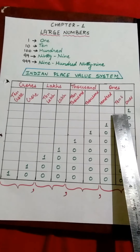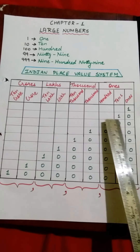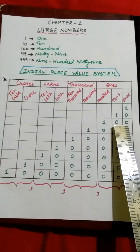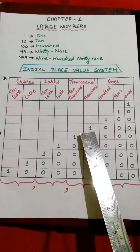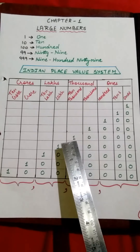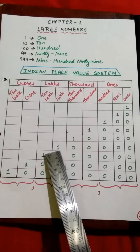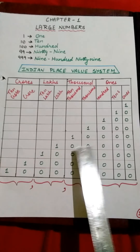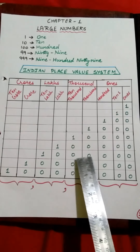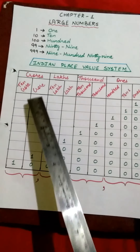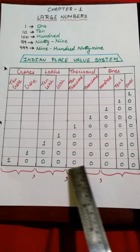If I am writing 1, it will come in the Ones place. That means we start filling from the Ones place. If you want to write 10, the 0 will come in the Ones place. If you want to write 1000, then 1 will come in the Thousands place followed by 3 zeros. If you want to write 10,000, then 1 will come in the Ten Thousands place followed by 4 zeros. If you want to write 1 Lakh, you will write 1 in the Lakhs position followed by 5 zeros. If you want to write 10 Lakh, the 1 will come in the Ten Lakhs place followed by 6 zeros. If you want to write 1 Crore, then 1 will come in the Crores place followed by 7 zeros. If you want to write 10 Crore, then 1 will come in the Ten Crores place followed by 8 zeros.